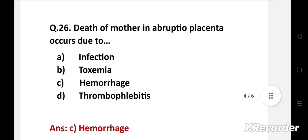Right answer is option C, hemorrhage. Placental abruption can cause life-threatening problems for both mother and the baby. Death of mother in abruptio placenta occurs due to hemorrhage.